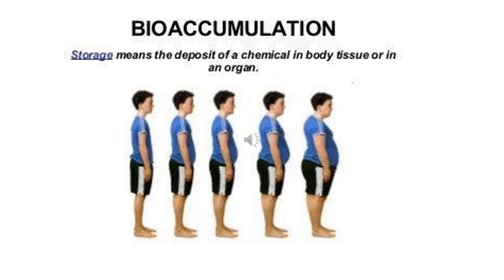Biomagnification takes place as chemicals transfer from lower to higher trophic levels. For example, if a fish is exposed to PCBs in the ocean, those accumulate in its fatty tissues over its lifespan — that's bioaccumulation. But when humans, bald eagles, or sharks eat that fish, they receive high concentrations from it. By eating large quantities of that fish, they biomagnify the concentration of the toxin, and it very likely will cause a negative effect in the organism that eats it.